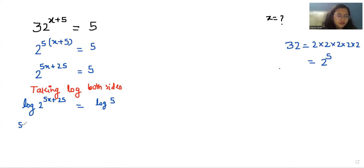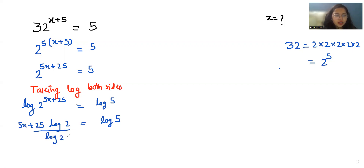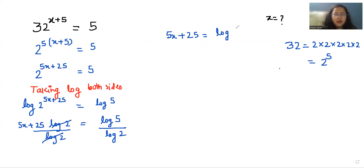Applying the power rule: (5x + 25) · log 2 = log 5. Now dividing both sides by log 2, we can cancel it out, giving us 5x + 25 = log base 2 of 5.